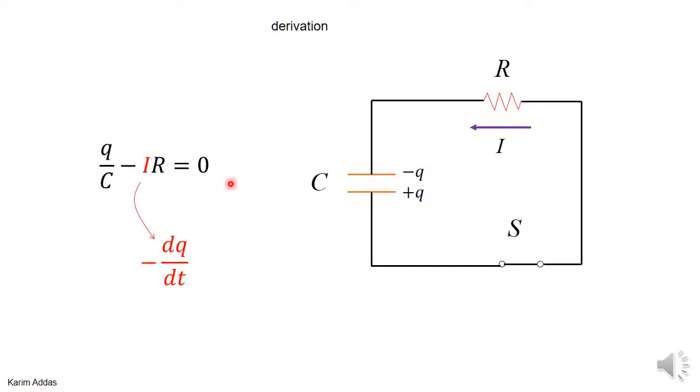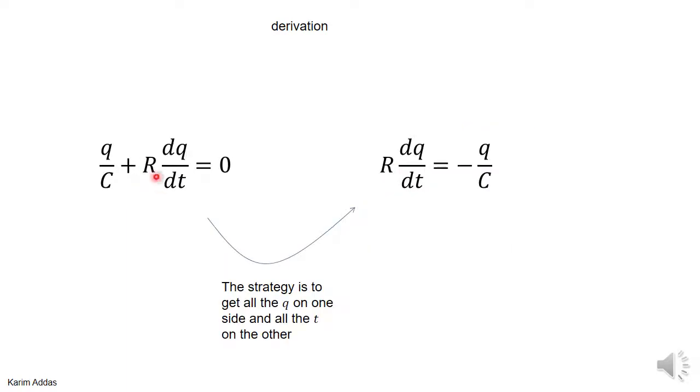This is the loop equation when you substitute the current as minus dq/dt. If you don't remember this, go back to the previous video to see where this came from. When you put minus dq/dt you get minus and minus plus r dq/dt. This is the differential equation that we have to solve.